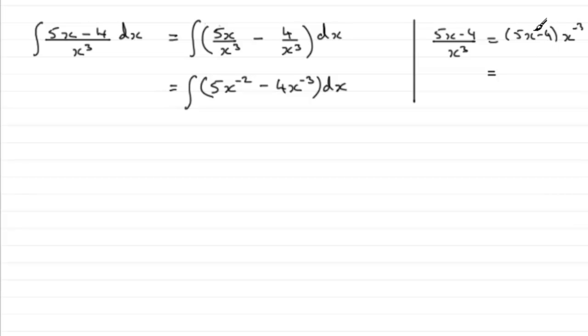So 5x times x^(-3), you'd add the powers because you're multiplying. You've got x to the power 1 multiplied by x to the power -3, add the powers and you get 5x^(-2).